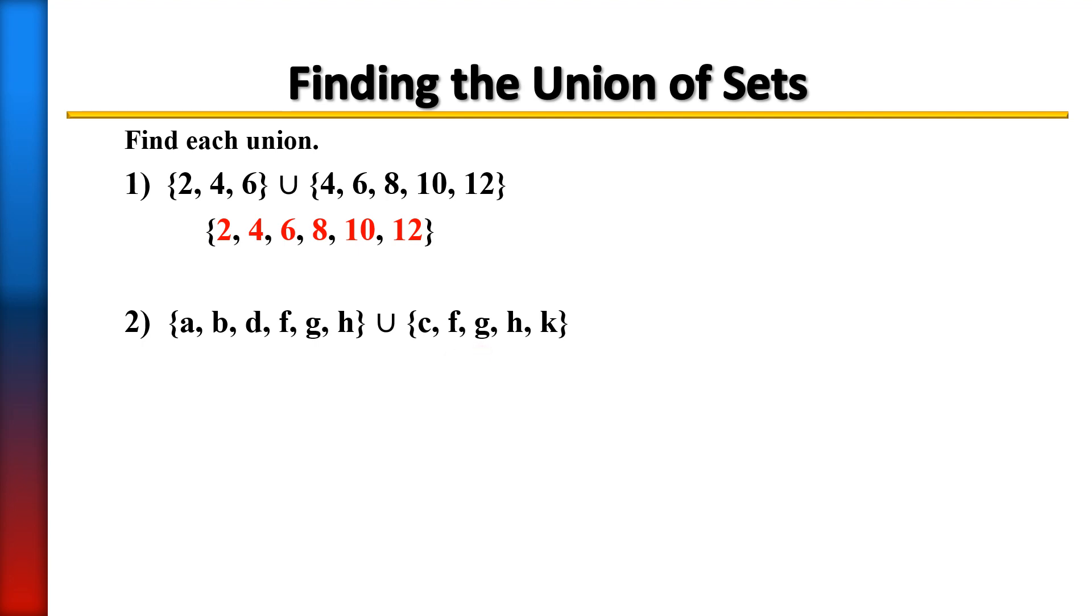And again, when the symbol is facing upward that's the union of set, which means to simply put them all together and form one set. If any members are repeated, meaning if any member is in both sets, remember it's just one member, you only list it once.